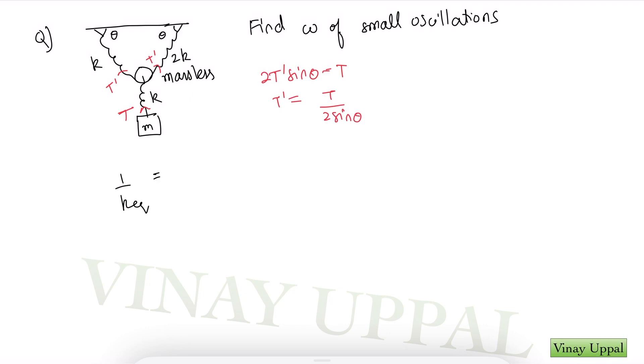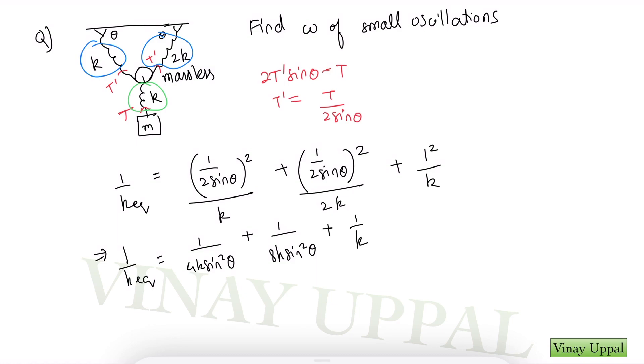Alright. So my formula 1 by K equivalent will be summation of coefficient of tension, coefficient of T squared. So for this spring, the tension is T dash. The coefficient is 1 by 2 sine theta. The whole square divided by the spring constant K plus same thing for the right spring. Once again the coefficient is 1 by 2 sine theta. The whole square divided by 2K this time plus the lowermost spring. The tension is T itself. So the coefficient is 1. So 1 squared by the spring constant K. Very straightforward. So I will have 1 by K equivalent as 1 by 4K sine squared theta plus 1 by 8K sine squared theta plus 1 by K. And what will you get K equivalent as 8K sine squared theta divided by 3 plus 8K or 3 plus 8K sine squared theta.